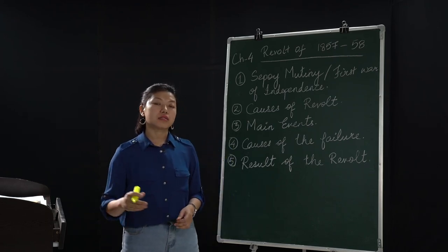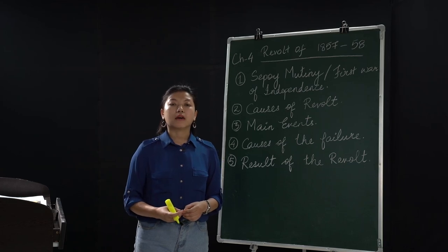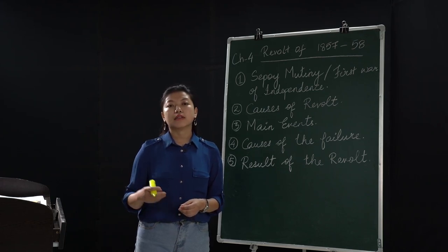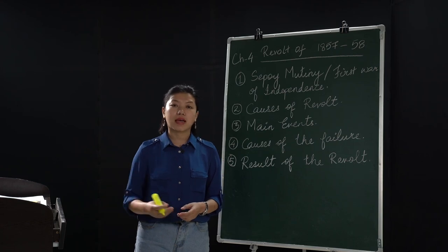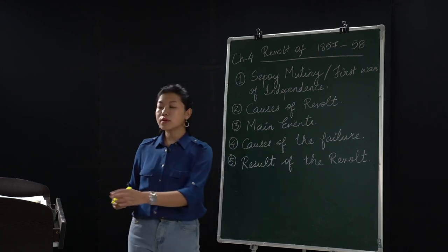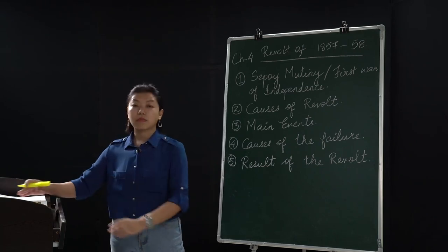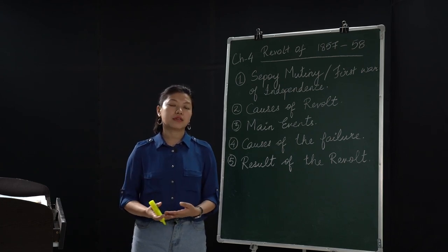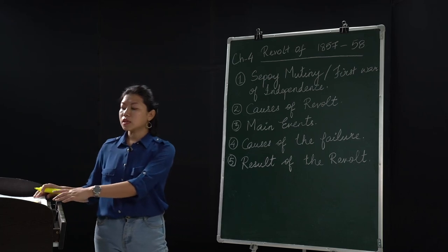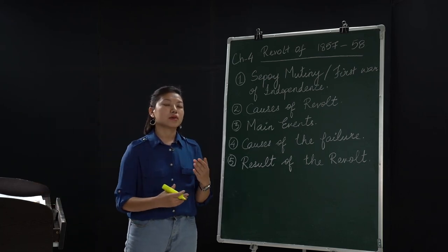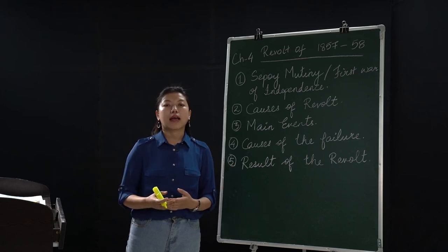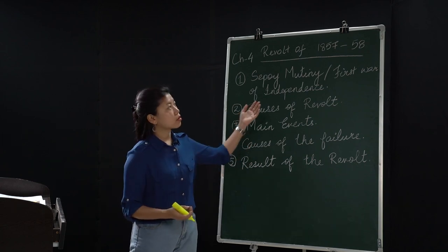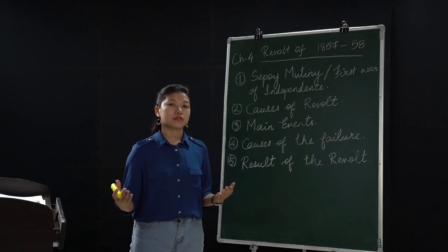Under this immediate cause, Mangal Pandey — an Indian soldier at the time — shot a British police officer and later fled. However, he was arrested and hanged to death. Whoever was involved in that shooting, in Barrackpore, was arrested and imprisoned. This news spread all over India, encouraging others to join the violent protest. The revolt slowly started affecting many parts of India.